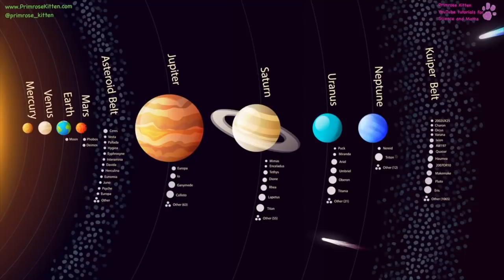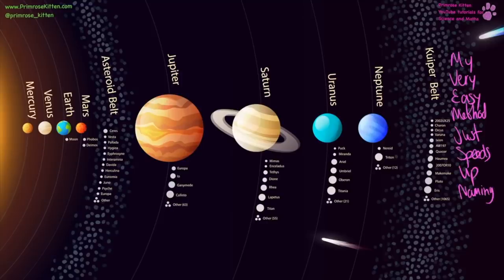Our solar system starts with the Sun, then Mercury, Venus, Earth, Mars and our moons, the asteroid belt with some dwarf planets, Jupiter, Saturn, Uranus, Neptune, and poor Pluto — which isn't a planet anymore, just a dwarf planet. To help remember the order, we have: My Very Easy Method Just Speeds Up Naming. Our dwarf planets include Pluto and others in the Kuiper Belt and asteroid belt. We also have an asteroid belt between Mars and Jupiter and another belt of large objects at the outer edge.